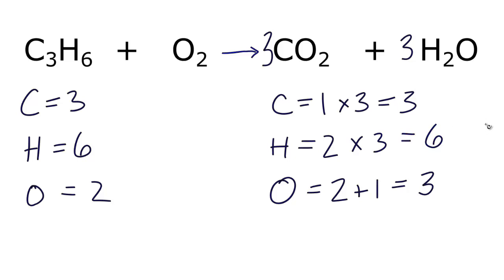What we need to do now is update our oxygens. So we have three times the two, six oxygens in the carbon dioxide, three times the one, that gives us three. So we have nine total oxygens on the product side of this equation.